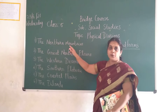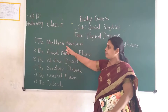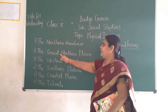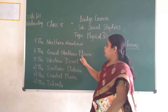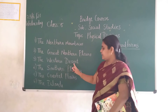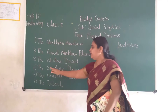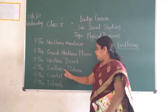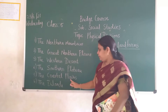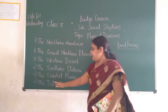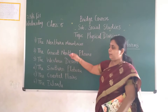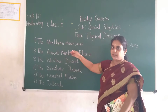One by one we are going to see: the northern mountains, the great northern plains, the western desert, the southern plateau, the coastal plains, and the islands.